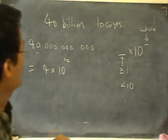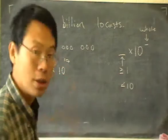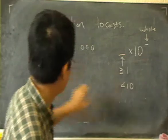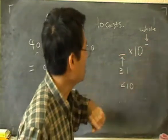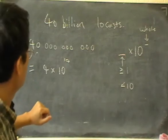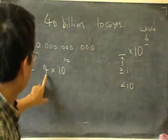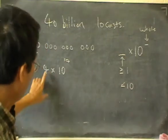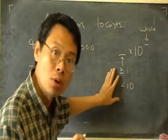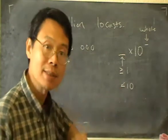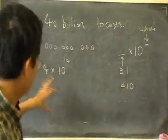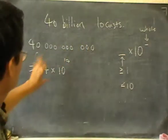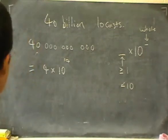This is already in standard form. It is important to check it meets the requirements: the power must be a whole number — that's the easy part — and the factor in front must be 1 or more but less than 10. The factor here is 4, which satisfies that condition. So 4 times 10 to the power of 10 is our answer.